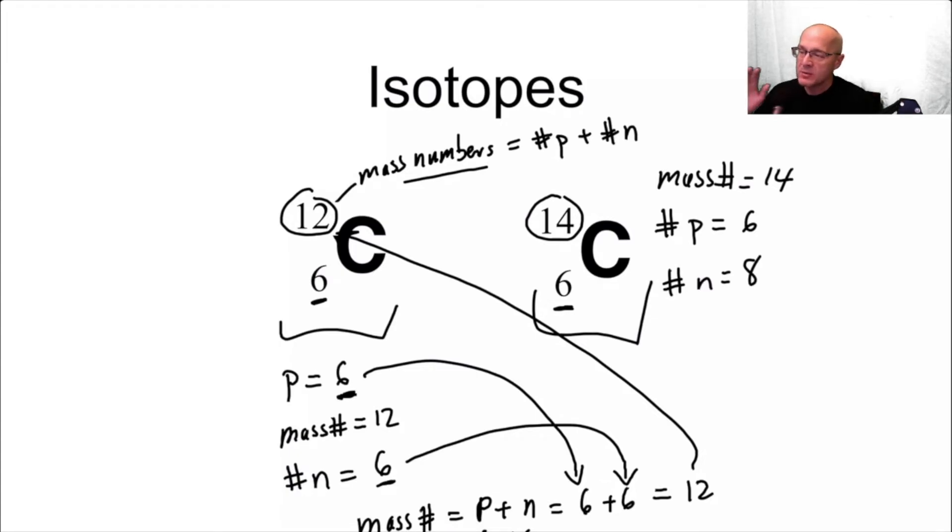Now in general, in organic chemistry, the most common isotopes you're going to deal with are carbon 12, 13 and 14. You see those sometimes. But by far the most common one you deal with is hydrogen, H1 and H2. Now H1 is called hydrogen. H2 is called deuterium, and it is commonly abbreviated capital D.